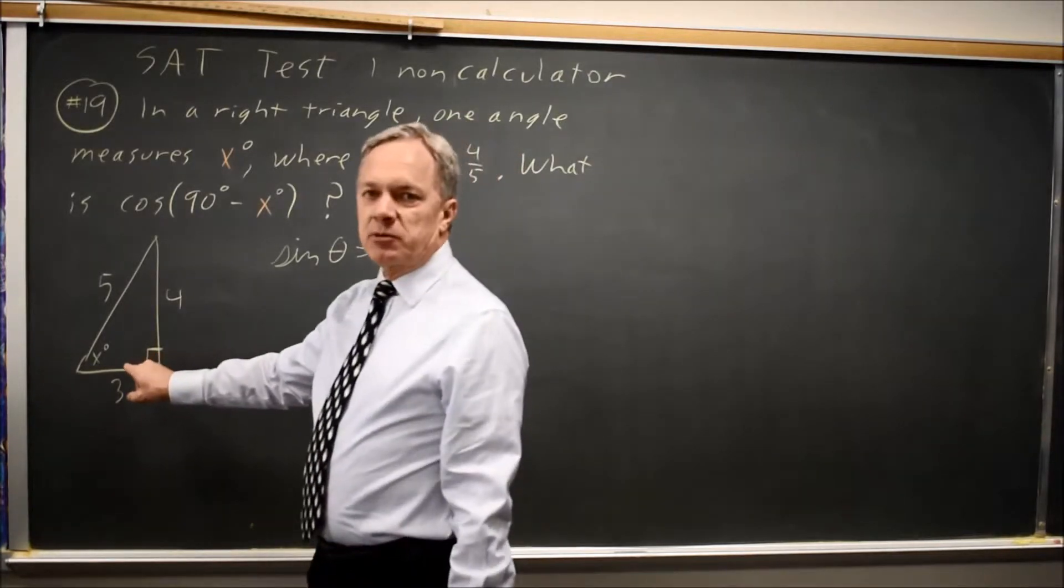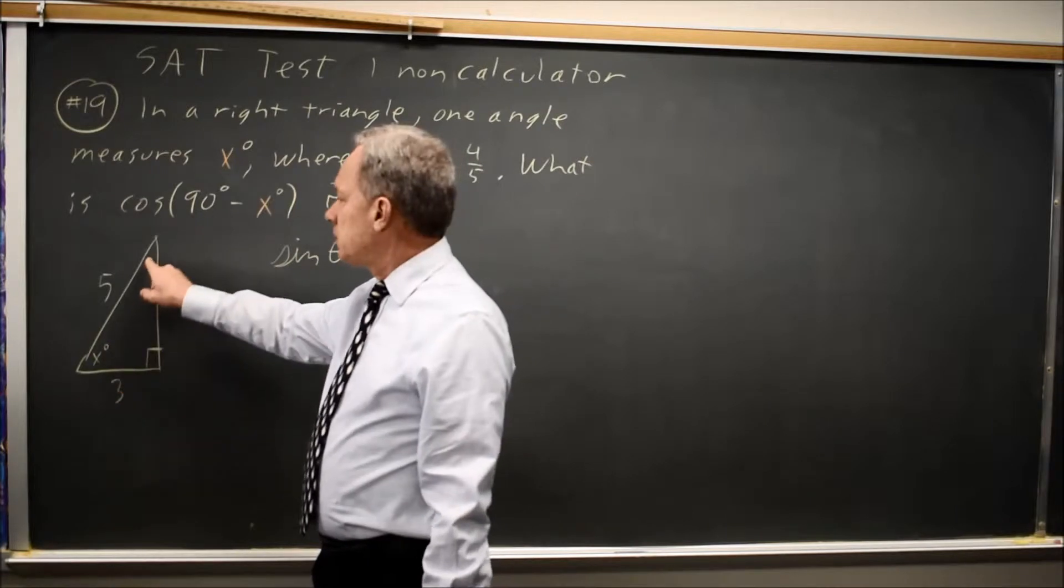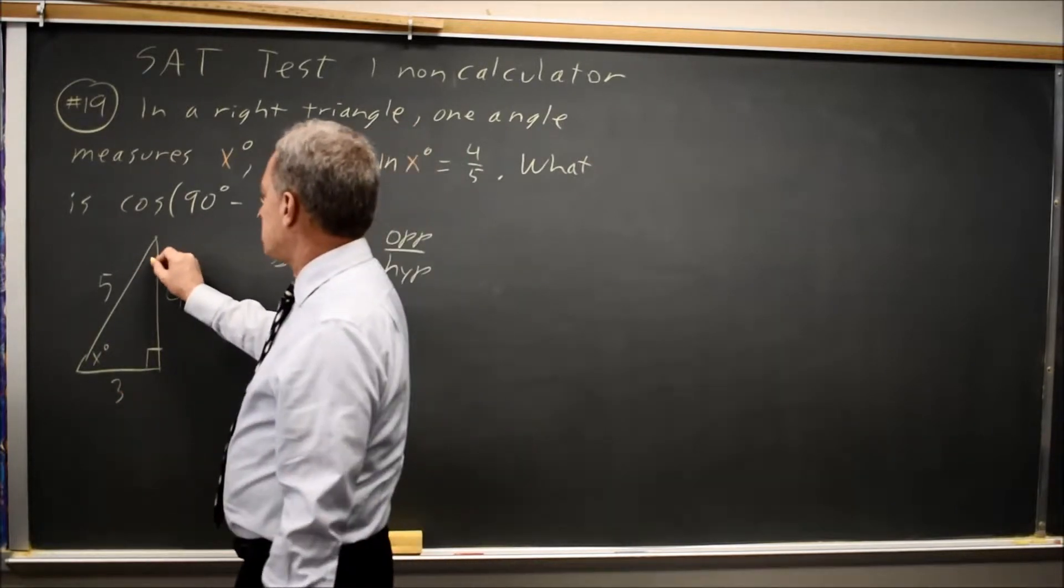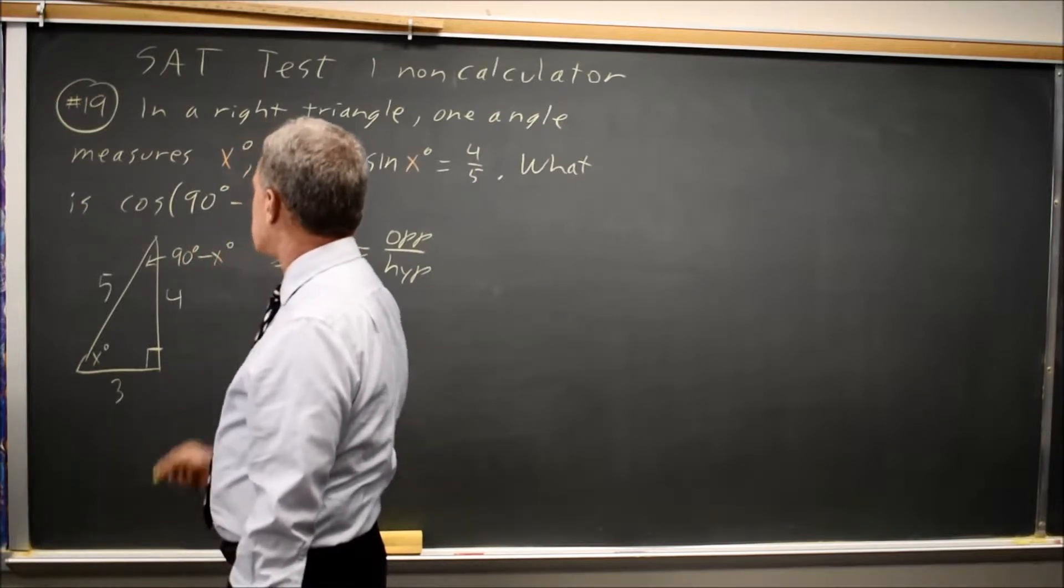Since the angles of a triangle add up to 180, the angles other than the right angle add up to 90. So this angle at the top has to be 90 minus x degrees.